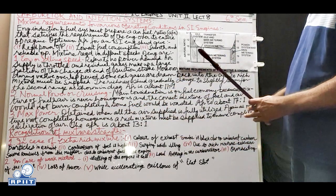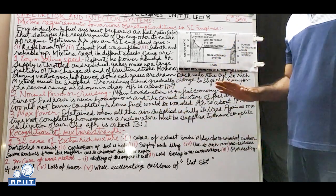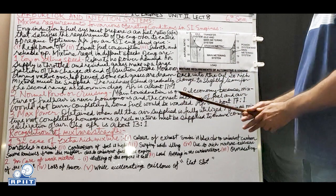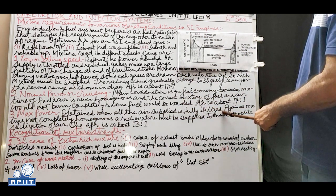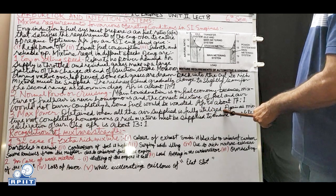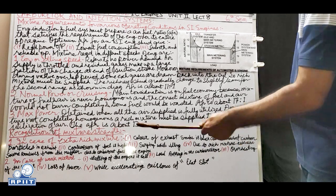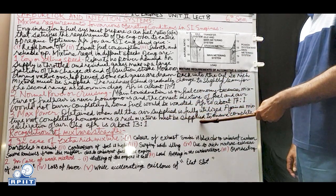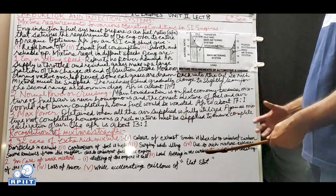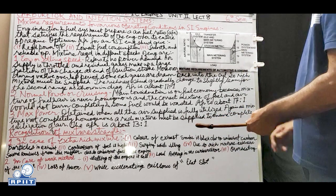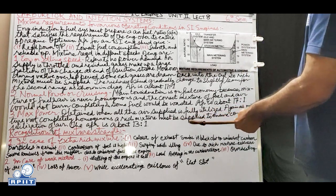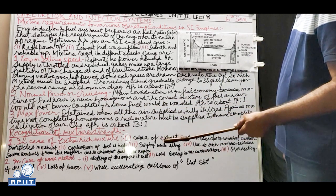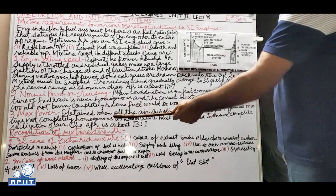For maximum power, the accelerator is fully pressed for full speed. This is obtained when all the air supplied into the cylinder is fully utilized. However, since the mixture is not completely homogeneous - pockets exist - and engine speed is very high, a rich mixture must be supplied to ensure complete utilization of all the incoming air.